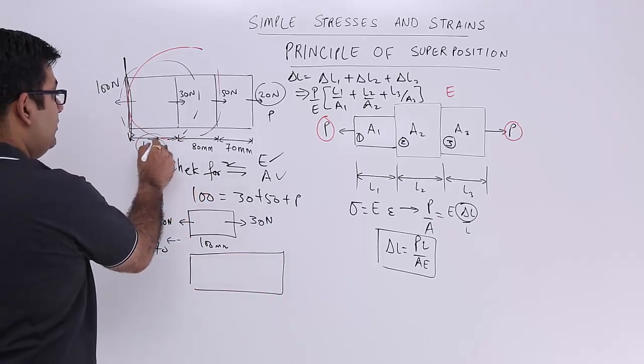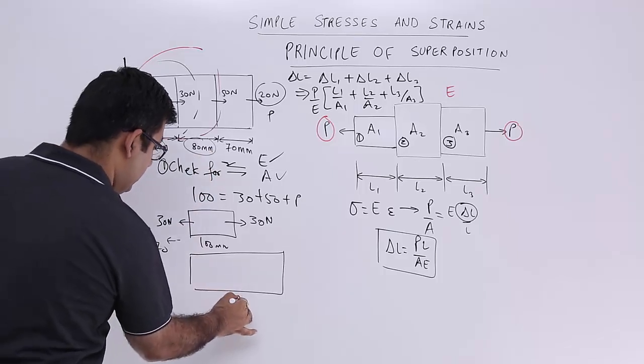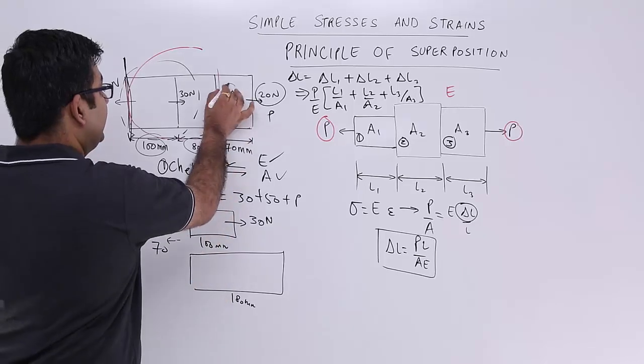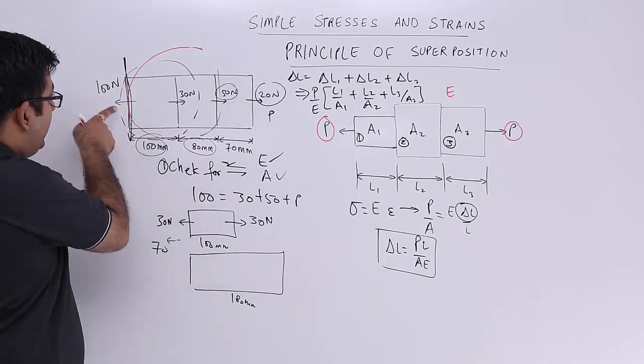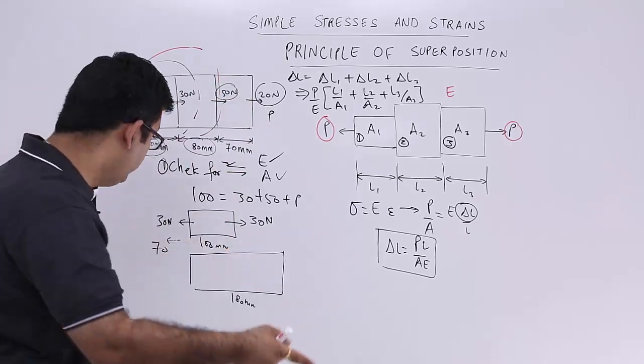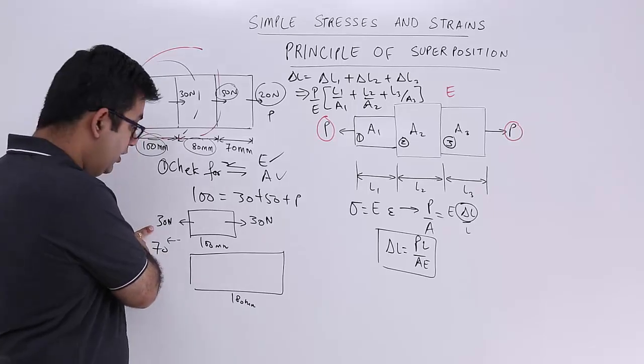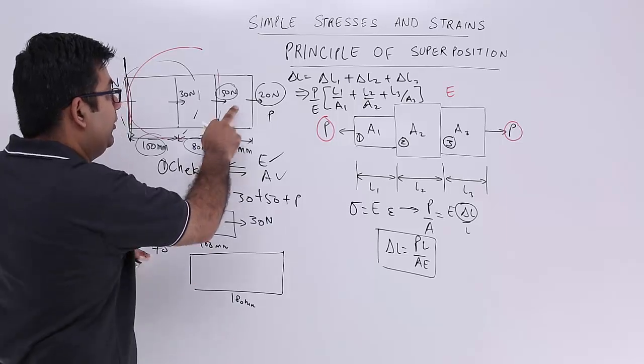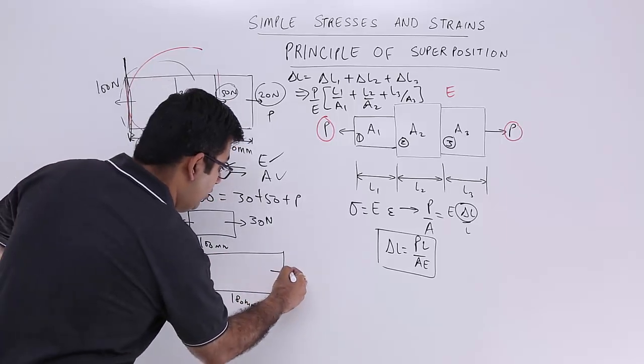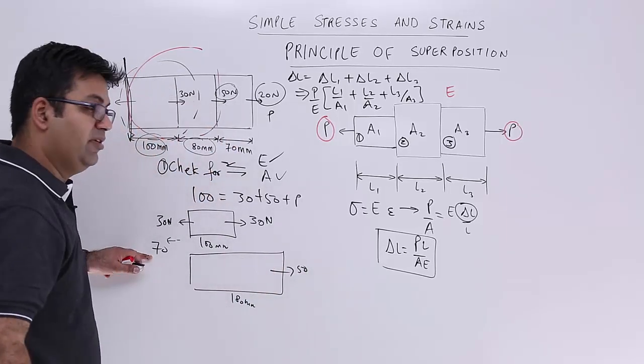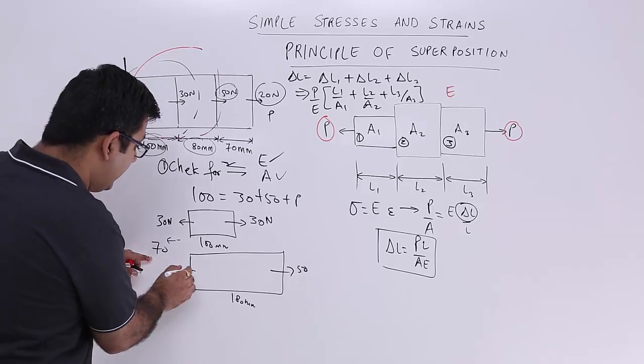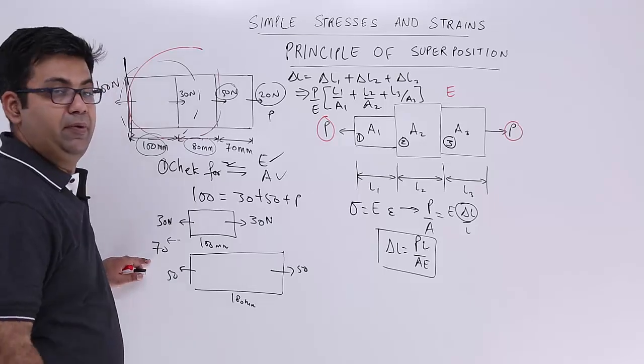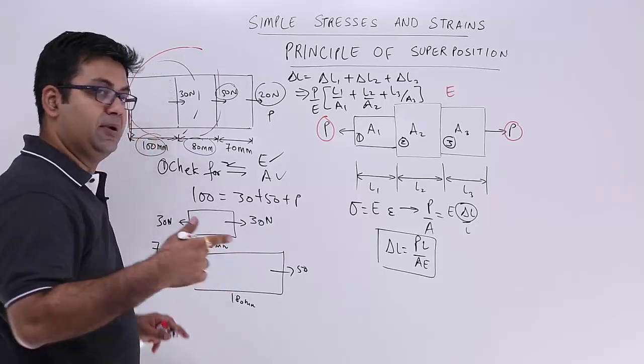Now the length is 100 plus 80. So this becomes 180 mm. Okay again taking the lower force because from 100 I have already consumed 30 over here. So now I only have 70 over here. So still 70 is higher as compared to 50. So I will apply the lower force which is 50 over here. Out of 70 I will apply 50 over here. So now this section comes into equilibrium. Now still I have 20 surplus.